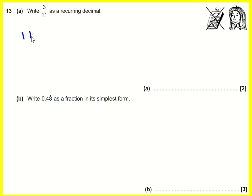I'm going to do short division to work this out as a decimal. So 11s into 3 — 11s into 3 don't go, so I put a zero there. But I don't just leave remainder 3; I carry it on, so I put 3.0 in and move the three along. We can still do short division in the same way as before. So 11s into 30 go twice, remainder 8.